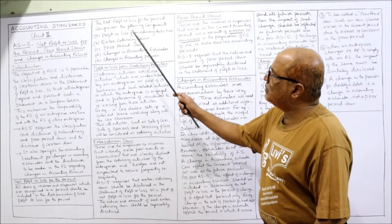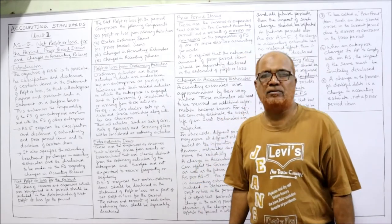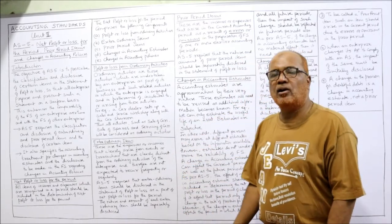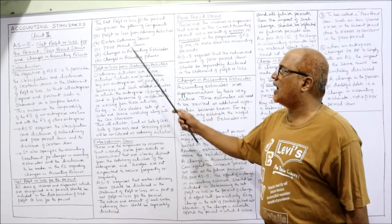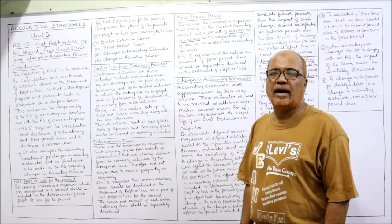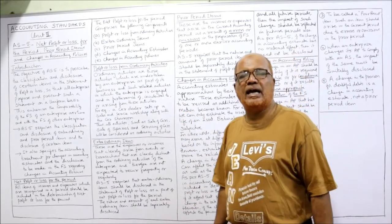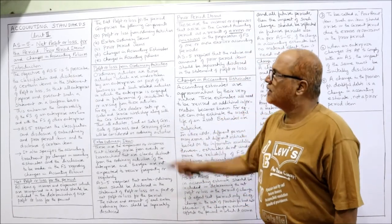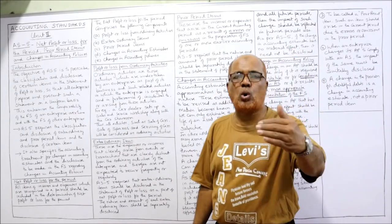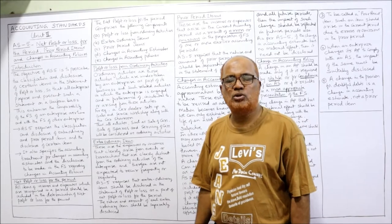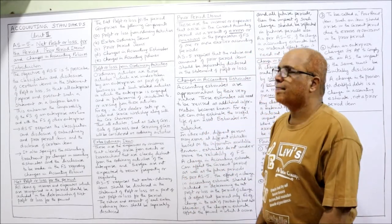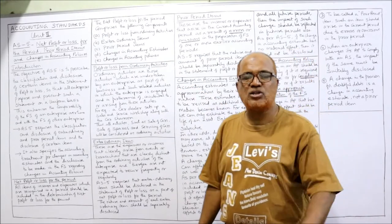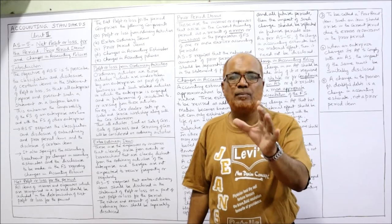The five items included in the statement of profit or loss are: first, profit or loss from ordinary activities; second, extraordinary items; third, prior period items; fourth, changes in accounting estimates; and fifth, changes in accounting policies. These five items are shown in the profit and loss statement to calculate the current year's profit or loss. In examination, write all five items.